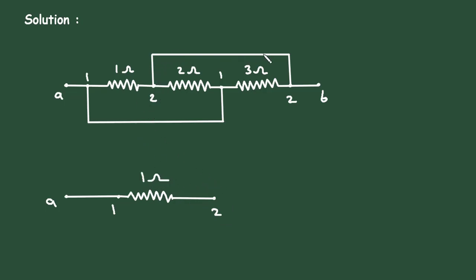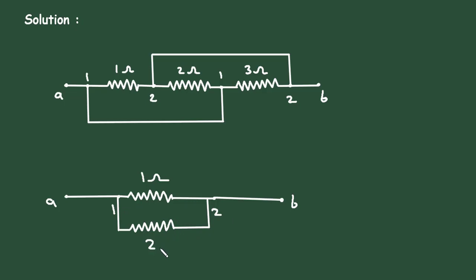Now node 2 is connected to B, so here it is connected to B. Next, this 2 ohm resistor is connected between node 1 and node 2, so let us connect 2 ohm here. This is a 2 ohm resistance connected between node 1 and node 2. Then next, this 3 ohm resistor is also connected between node 1 and node 2, so this will be a 3 ohm resistance.